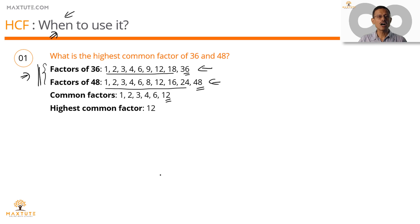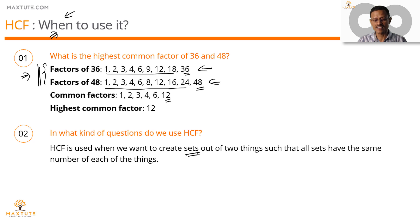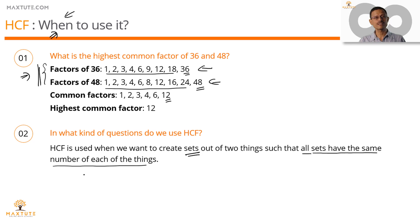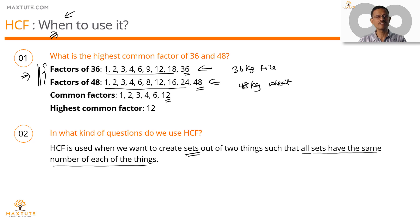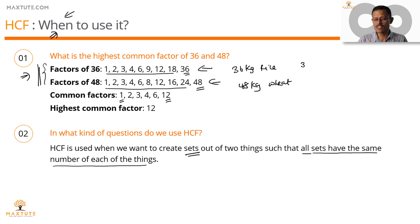So when will we use HCF? When we create sets or groups out of two things such that all the sets have the same number of each thing — that's the most important point. For example, I have 36 kg of rice and 48 kg of wheat. I'm trying to make packets of rice and wheat such that the packet sizes are of the same weight. If I make 1 kg packets, I'll have 36 packets of rice and 48 packets of wheat.